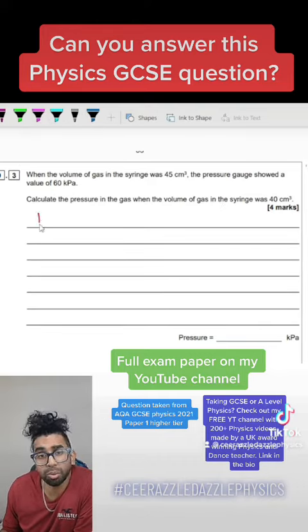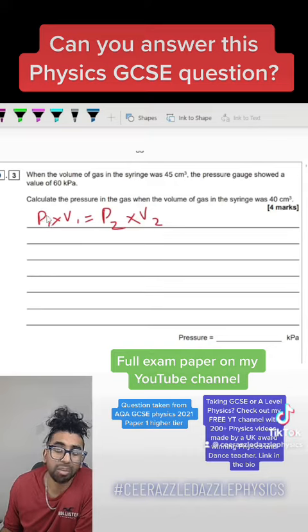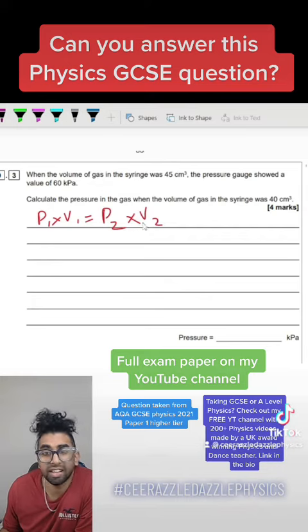Right, in order to tackle this question, we need to use the following formula: P1 times by V1 is equal to P2 times by V2, because the pressure in one scenario times by the volume in one scenario will be equal to the pressure in the second scenario times by the volume in the second scenario.